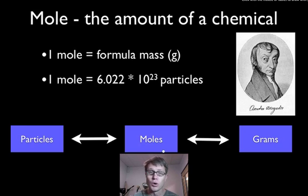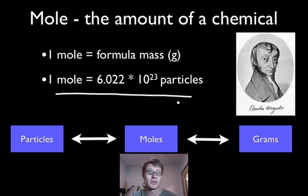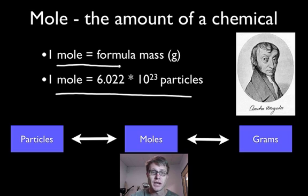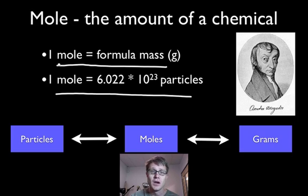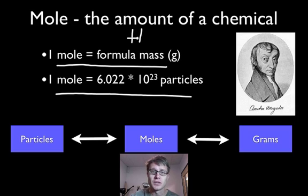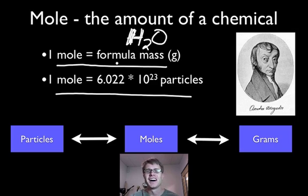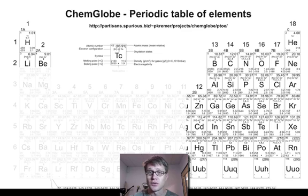So what is a mole? A mole is simply a number — 6.022 times 10 to the 23rd particles. The other thing you need to know is how much a mole actually weighs. Just like one dozen eggs weighs 24 ounces, one mole always weighs the formula mass. So if we're dealing with H2O, for example, we have to figure out the molecular mass or formula mass of that.